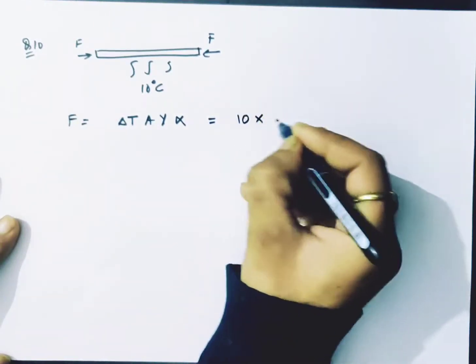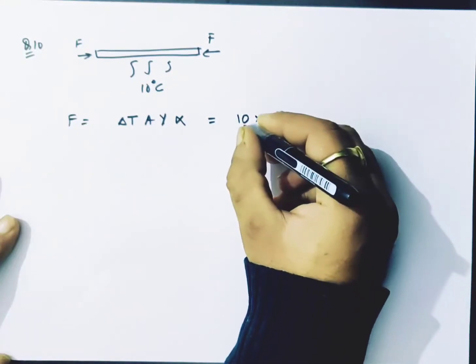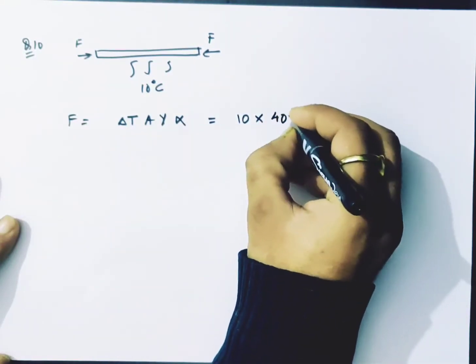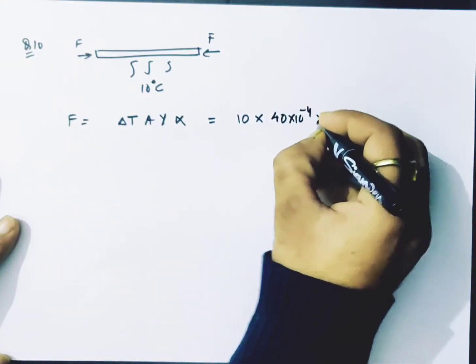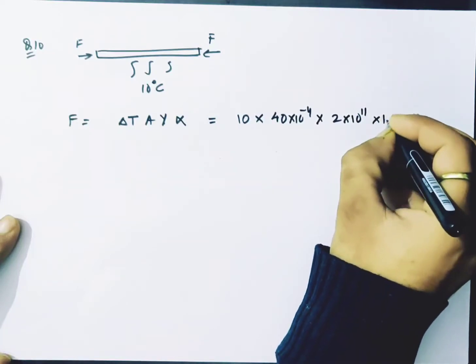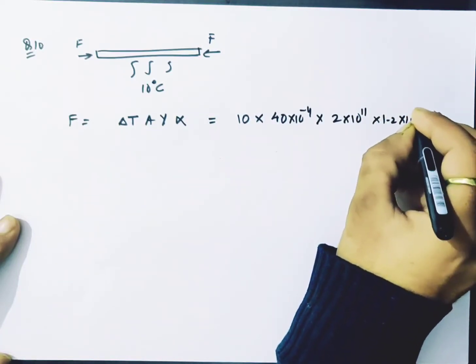We can directly use the given data to get the answer. So we can use 10 degrees C, area of cross-section is 40 cm² which is 4×10⁻⁴, Young's modulus is 2×10¹¹, and alpha is 1.2×10⁻⁵. Let's calculate.